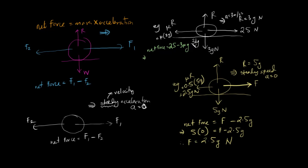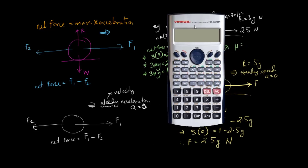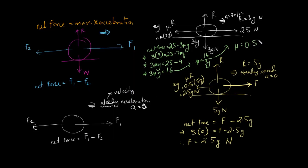Net force equals mass into acceleration: mass is 3 kg and acceleration is 3 meters per second squared. So 25 minus 3mu G equals 9. That means 3mu G equals 16, therefore mu equals 16 divided by 3G, which is 16 divided by 3 into 9.8. The value of mu is 0.544.